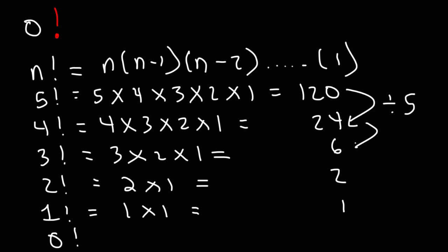To go from 24 to 6, we divide by 4. To go from 6 to 2, we divide by 3. To go from 2 to 1, we divide by 2.